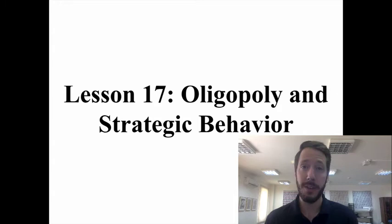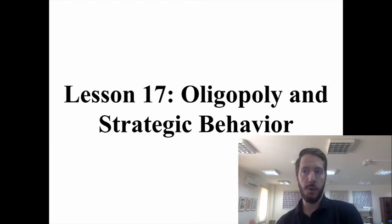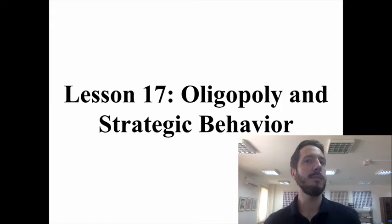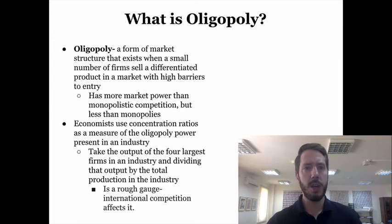Hi AP Econ students, Mr. Muller here. In today's video, which is the last video in our third unit on the theory of the firm, we're going to be talking about the last type of firm market structure — oligopoly — and the strategic behavior of firms, whether in an oligopoly or a monopolistic competitive market. Let's get started.